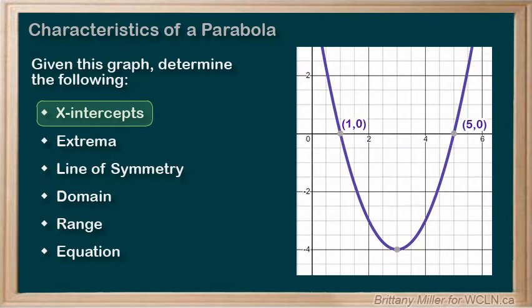If the intercepts were not clear on the graph we would need to use an alternate method to find them, like factoring or using the quadratic formula.